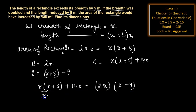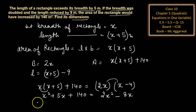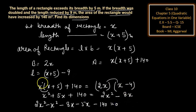Expanding gives x squared plus 5x plus 140 equals 2x squared minus 8x. Shifting all terms to one side, we get 2x squared minus 8x minus 5x minus x squared minus 140 equals 0, which simplifies to 2x squared minus 13x minus 140 equals 0.